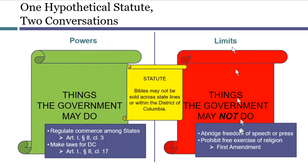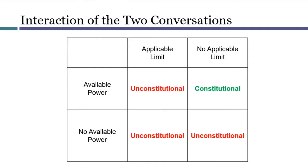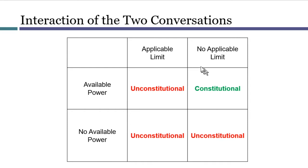In this limits conversation, we're looking at different language from different places in the Constitution. We'd be talking about different constitutional goals that reflect different parts of the nation's history and values than the goals discussed when talking about powers. A government action is constitutional only if the government is relying on an available source of power, and it's not using that power in a way that violates some applicable limit.